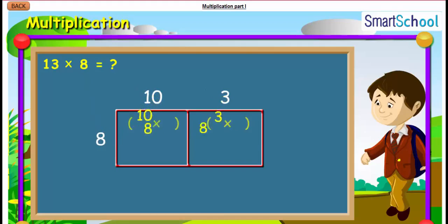we get 10 plus 3 into 8 which is equal to 80 plus 24 which is 104. So, here you see that instead of multiplying 13 into 8, we have broken 13 into 2 parts so that further multiplication becomes easier.